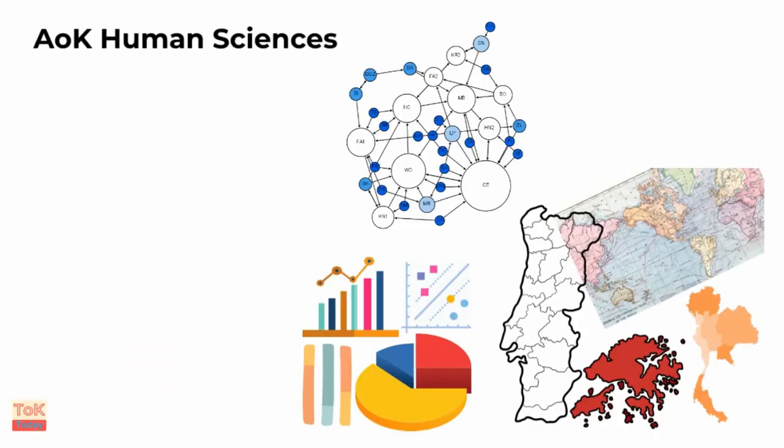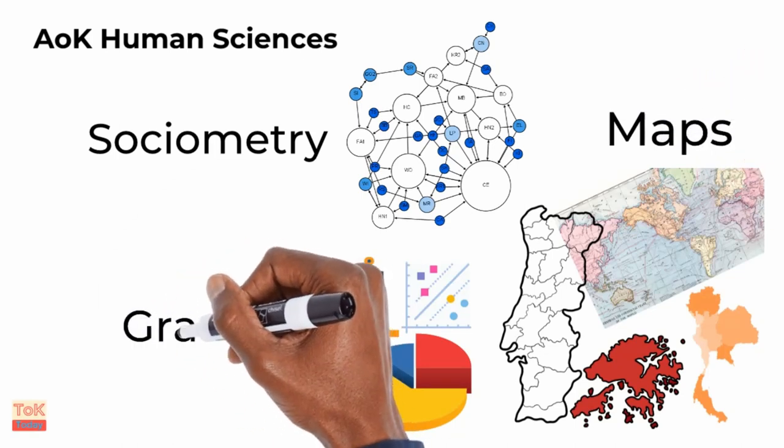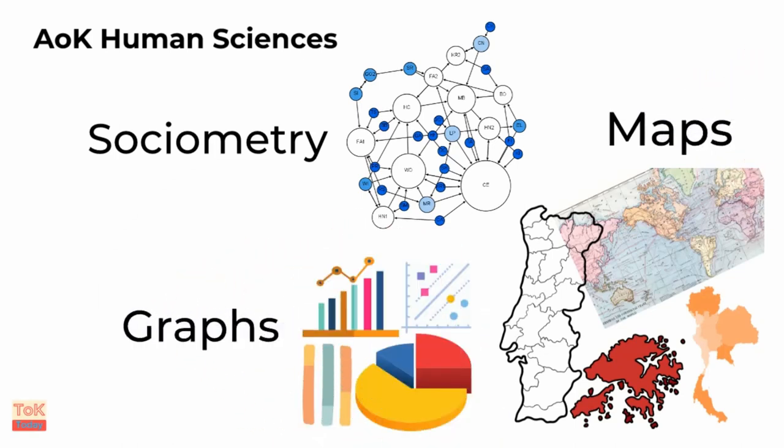So let's start with AOK human sciences. There are many different forms of visual representations used in the human sciences. The three that I'll focus on are sociometry, maps and graphs. Again, feel free to explore other visual representations that you particularly enjoy.